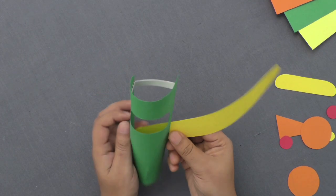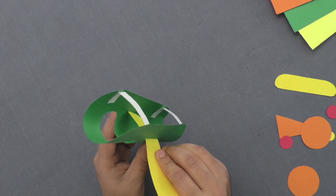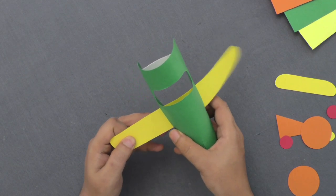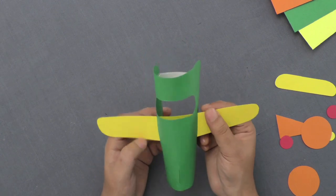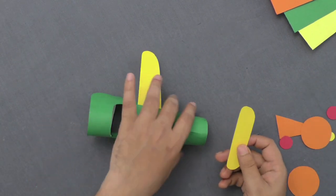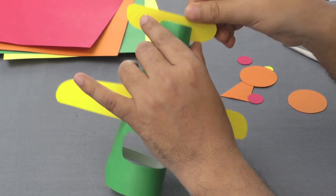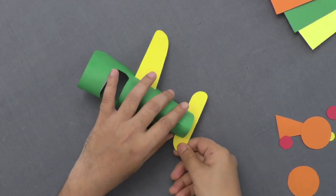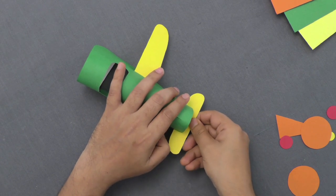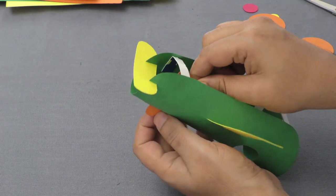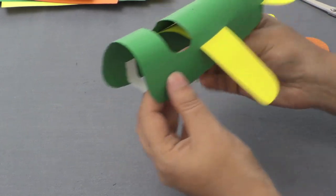Make a slit across the body of the plane and insert the wing piece in the slit. Now, slowly insert the tail piece in the slit from behind the body of the plane. Pick up the rudder piece and insert it above the tail piece.